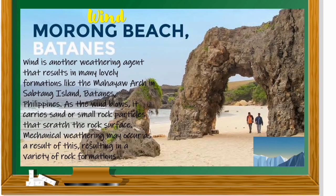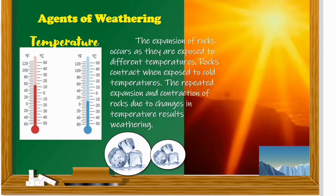Wind is another weathering agent that results in many lovely formations, like the Mahayaw Arch in Sabtang Island, Batanes, Philippines. As the wind blows, it carries sand or small rock particles that scratch the rock surface. Mechanical weathering may occur as a result of this, resulting in a variety of rock formations. Temperature: the expansion of rocks occurs as they are exposed to different temperatures. Rocks contract when exposed to cold temperatures. The repeated expansion and contraction of rocks due to changes in temperature results in weathering.